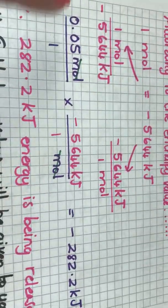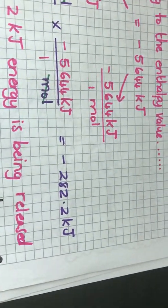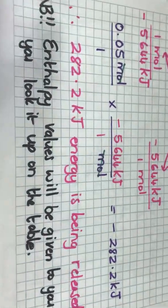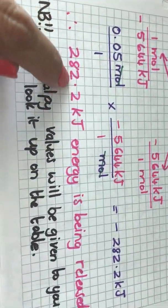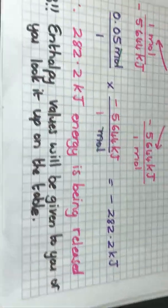So if I do this, calculate this out, I see my answer is minus 282.2 kilojoules of energy. The negative tells me that energy is released so my final answer will be that 282.2 kilojoules of energy is being released in this calculation.